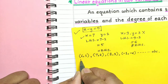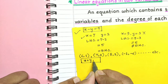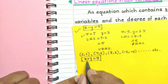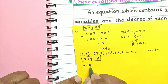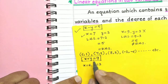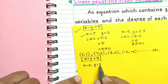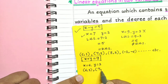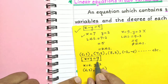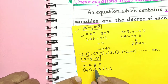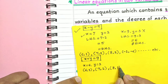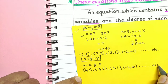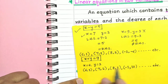Now consider another example: x plus y is equal to 9. Solutions for this equation include (6, 3), (7, 2), (8, 1), (−1, 10) and so on — we need two numbers whose sum is 9. We can find infinitely many solutions to this equation. Observing the solutions of both equations x minus y equals 5 and x plus y equals 9, we find a common ordered pair: (7, 2). That means x equal to 7 and y equal to 2 is a common solution to both equations.